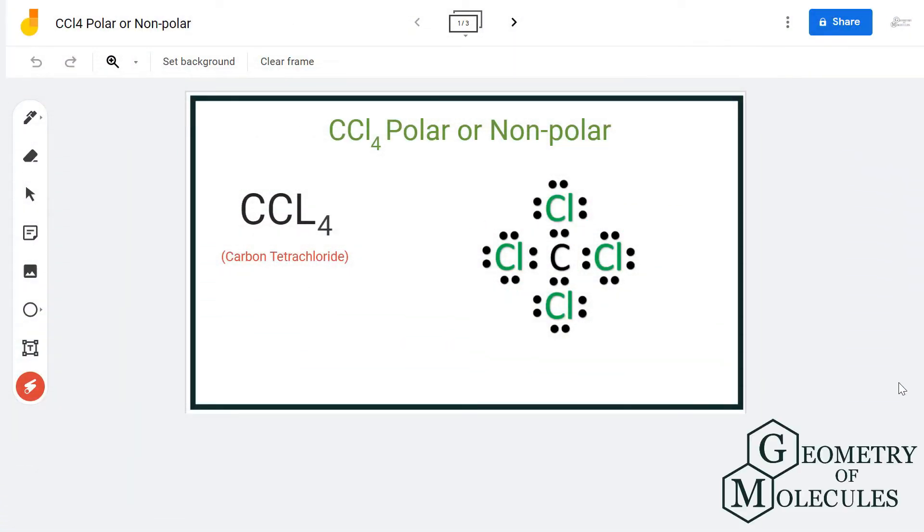Hi guys, today in this video we are going to determine the polarity for CCL4 molecule. It's a chemical formula for carbon tetrachloride. To determine its polarity, we will first go through its Lewis structure and shape.